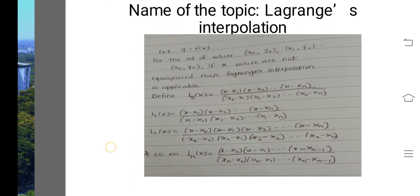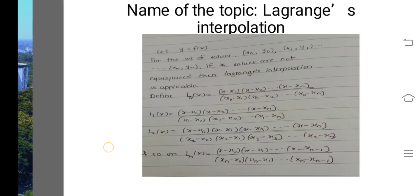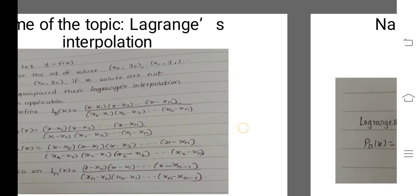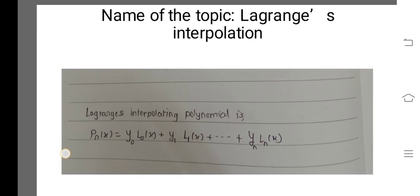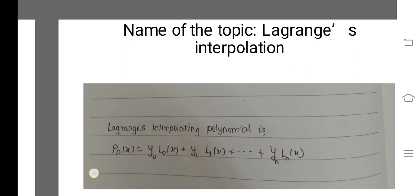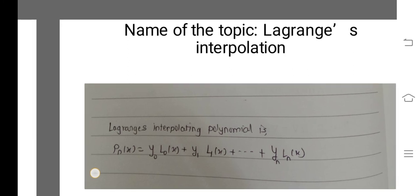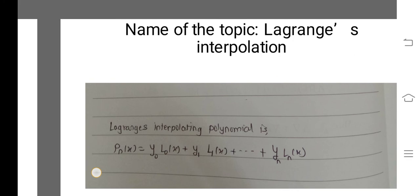Now we have all the polynomials L0(x), L1(x) and so on up to Ln(x). Lagrange's interpolating polynomial is given by: Pn(x) = y0·L0(x) + y1·L1(x) + y2·L2(x) + ··· + yn·Ln(x), where L0(x), L1(x), etc. are defined as in the previous slide.